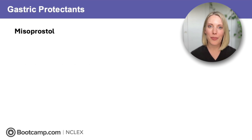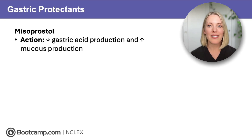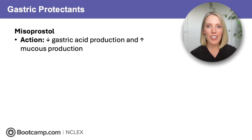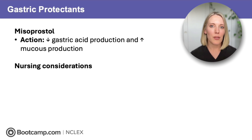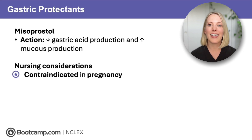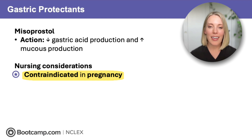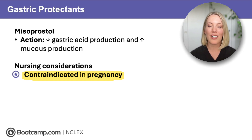Our last medication is misoprostol. It works in two ways: it decreases gastric acid production and increases mucus production, so it does a really good job protecting the stomach lining. It's often given to clients at high risk for ulcers, like those who are hospitalized or taking long-term NSAID therapy. The key safety issue the NCLEX will ask about is that misoprostol is absolutely contraindicated in pregnancy, because it can cause uterine contractions, significantly increasing the risk for miscarriage and preterm labor.